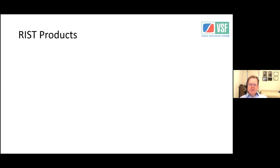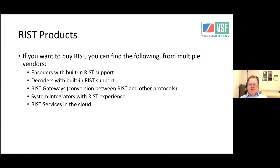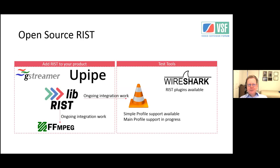RIST products are available from multiple vendors: encoders with built-in RIST, decoders with built-in RIST, RIST gateways, conversion between RIST and other protocols, system integrators with RIST experience, and RIST services in the cloud. There is also open source RIST — libRIST, FFmpeg, and Wireshark all have quarterly available open source plugins.